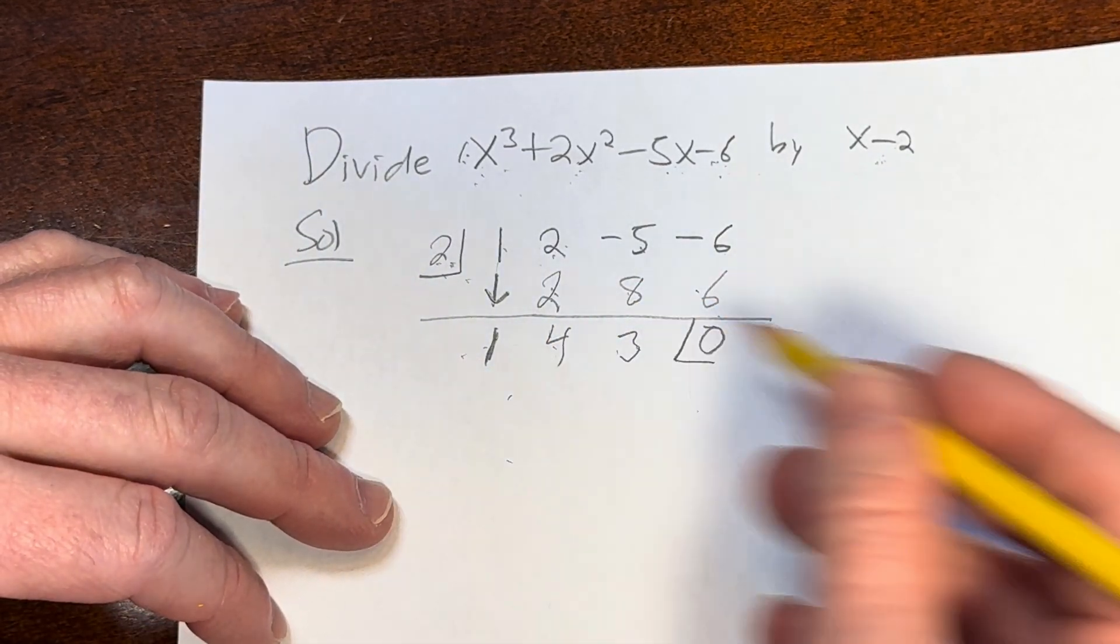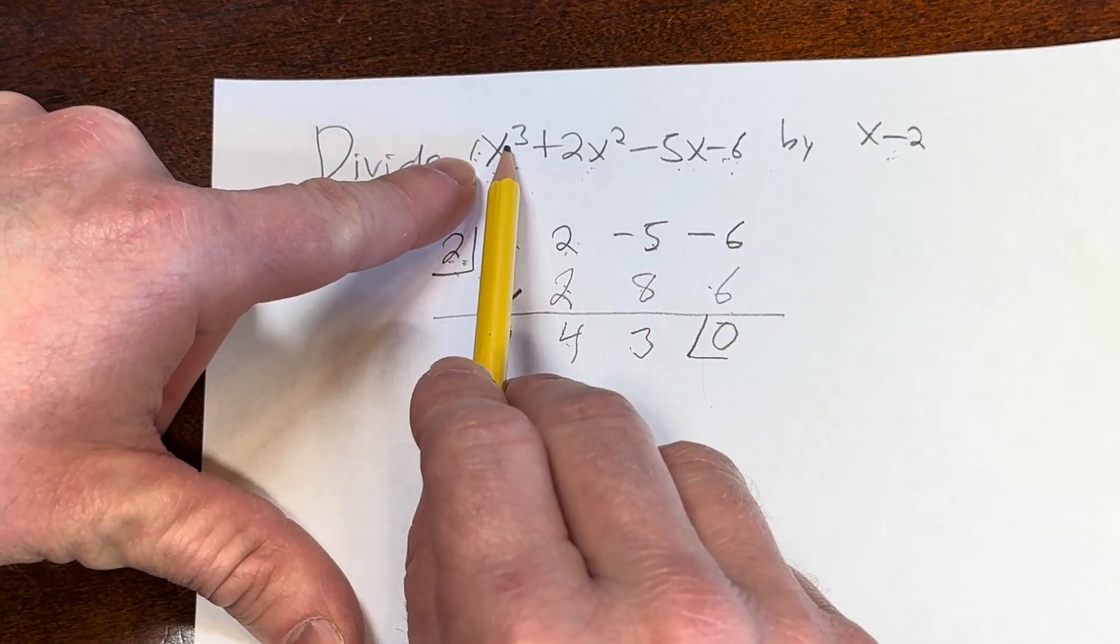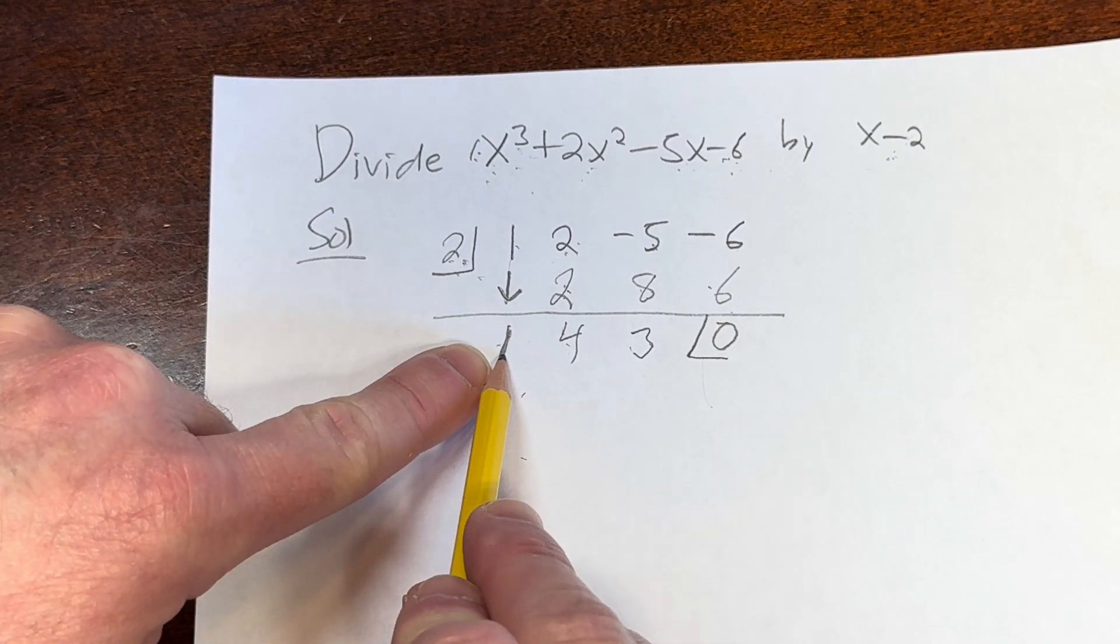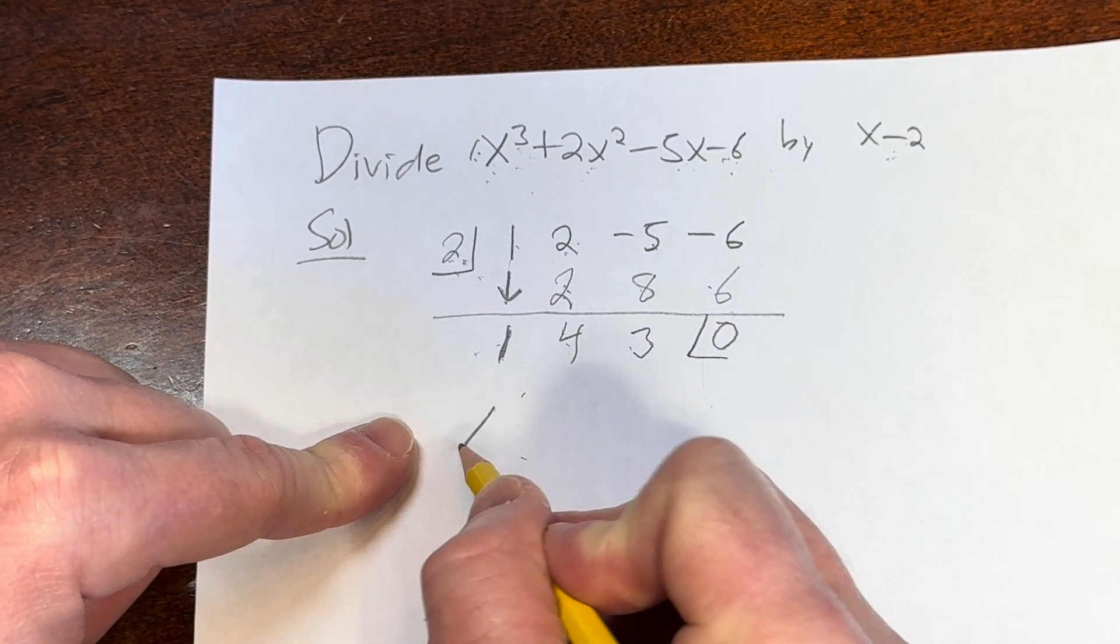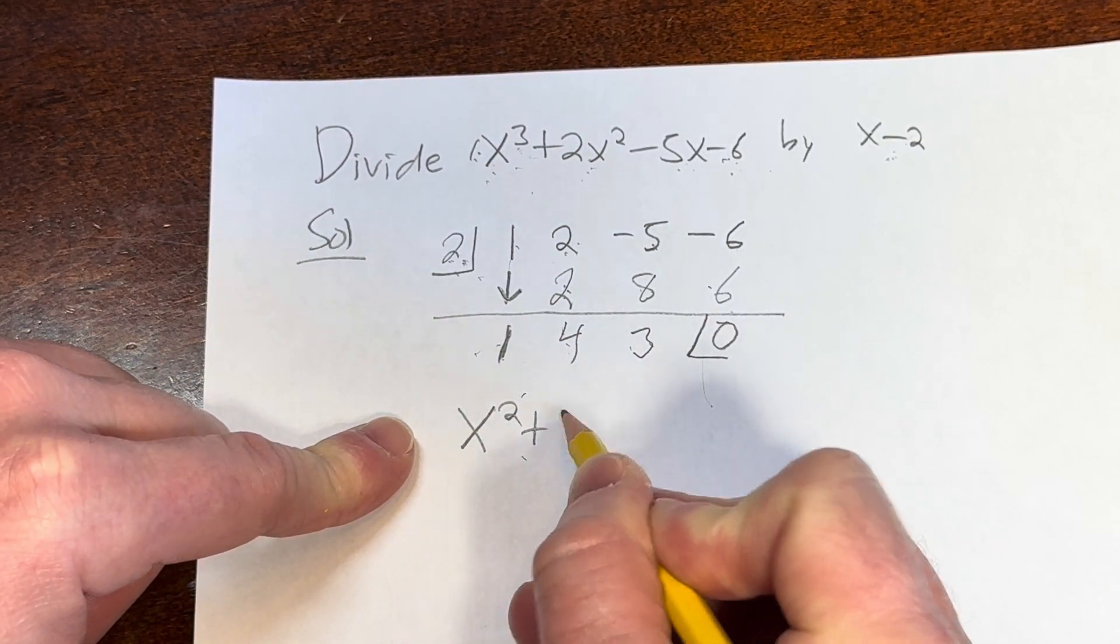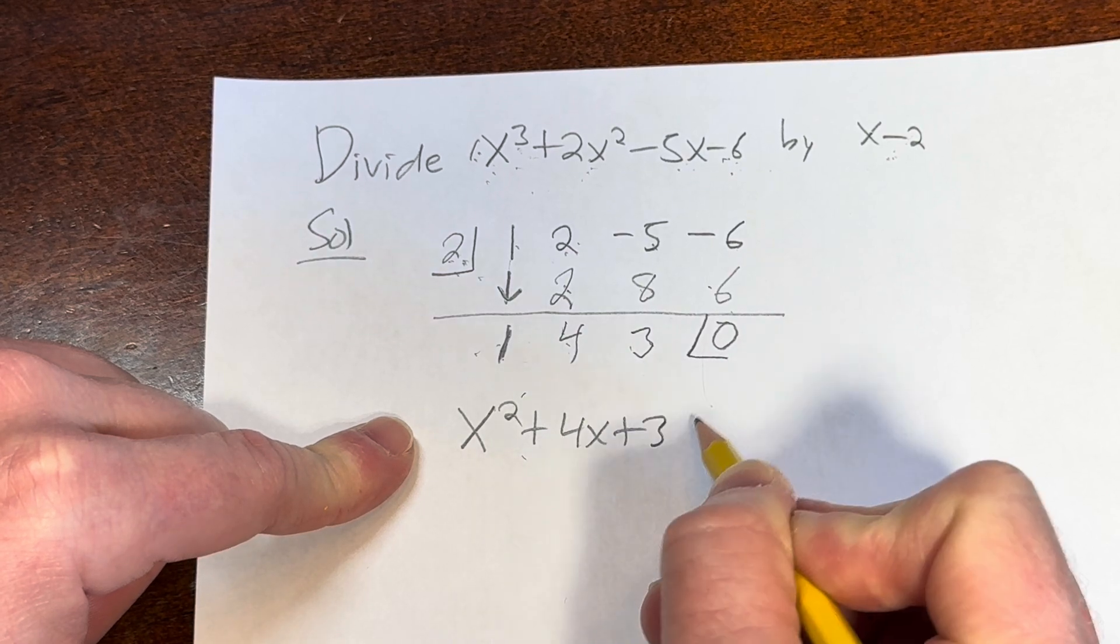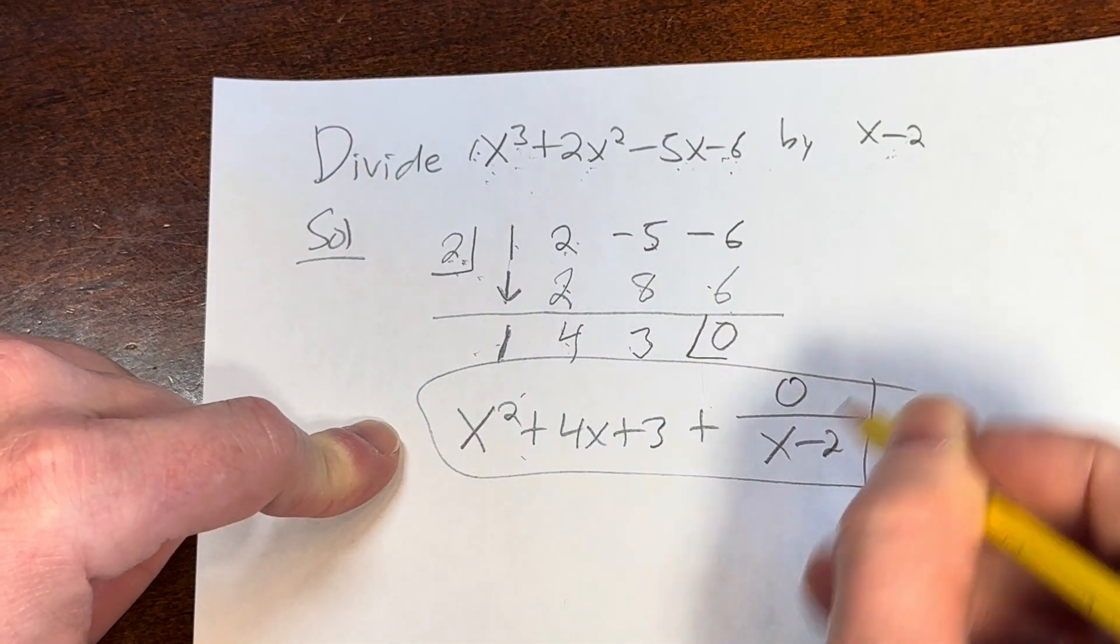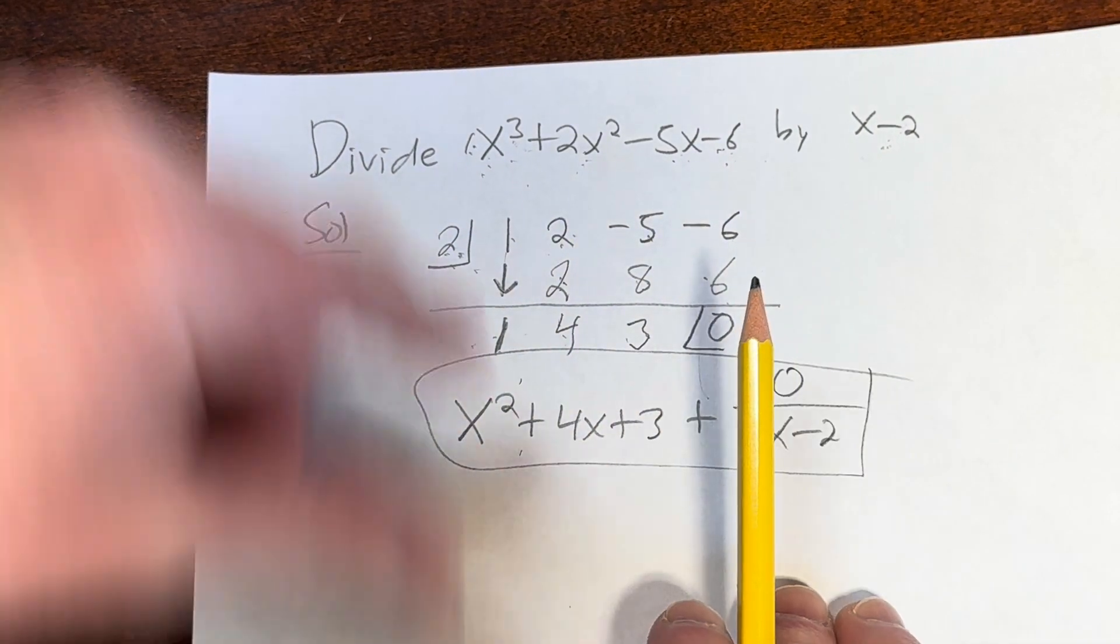And so in this case, the final answer, how do you get it? Well, you basically take 1 degree less. So this is x cubed, so you want to start at x squared. So it would be 1 times x squared, or simply x squared, plus 4x, plus 3, plus the remainder, which is 0, over the divisor, which is x minus 2.